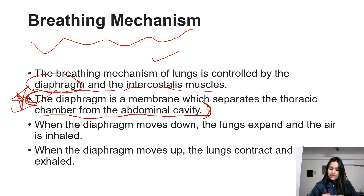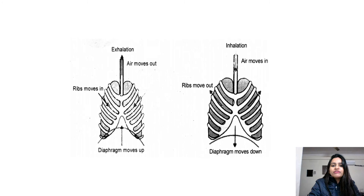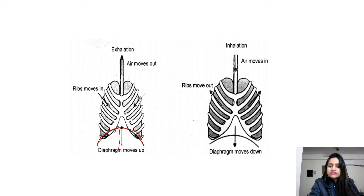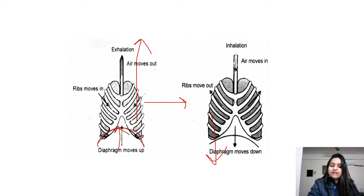When the diaphragm moves downward, the lungs expand — and since they want more air, air will be inhaled. When the diaphragm moves upward, the lungs contract, and air moves out — air is exhaled. This breathing mechanism diagram is very important. The diaphragm separates the thoracic cavity from the abdominal cavity.